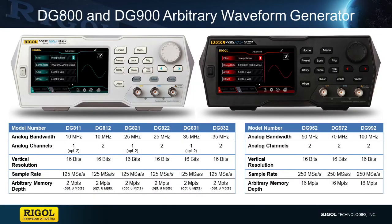The DG800 and DG900 series features 16-bit vertical resolution, making these the world's most affordable 16-bit waveform generators on the market. With a 4.3 inch touchscreen display, fanless design, two fully functional channels, and SiFi 2 technology, these instruments give engineers increased control, accuracy, and flexibility over their waveforms — providing uncompromised performance at an unprecedented value. For questions, contact us at Rigol or visit rigol.com for more details.